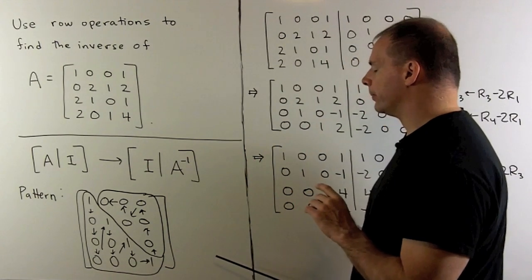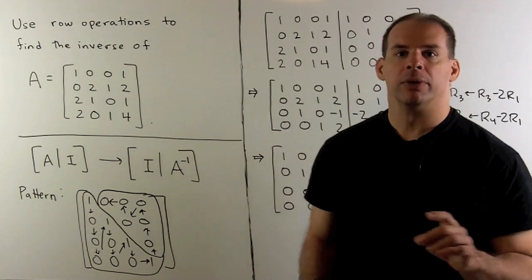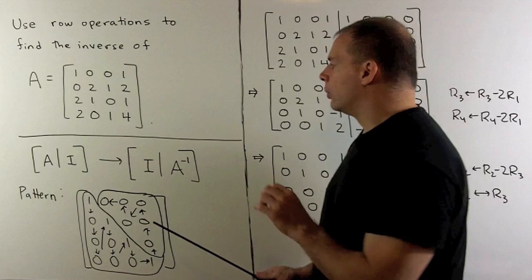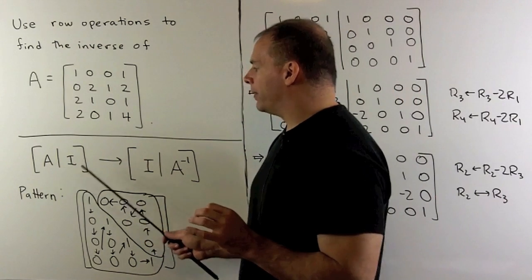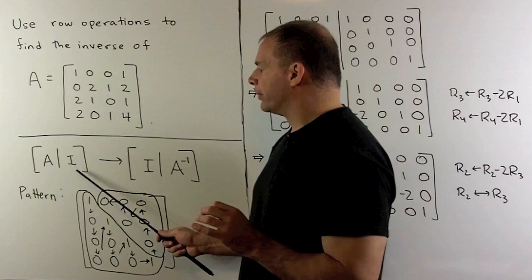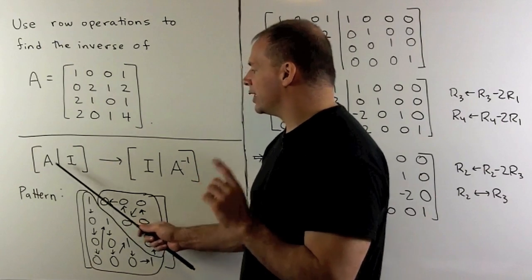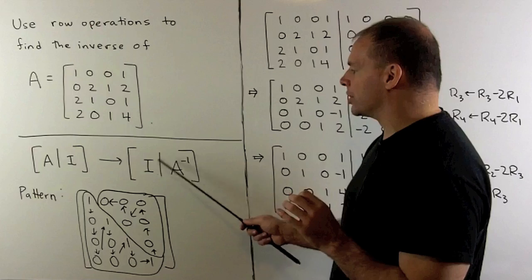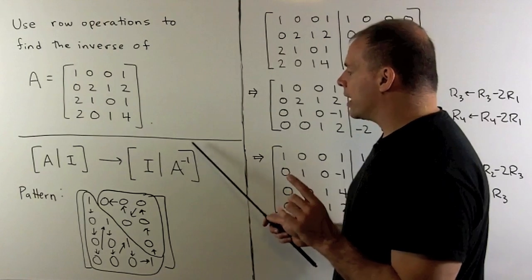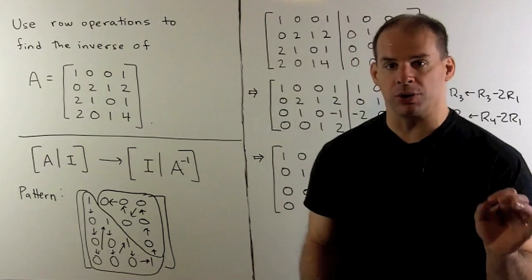Now for the overview, what I'm going to want to do: we take our A matrix, augment it with the four by four identity matrix, and perform row operations until we get to the augmented matrix where the four by four identity matrix is in the first slot. What comes out of the second slot will be our inverse matrix.